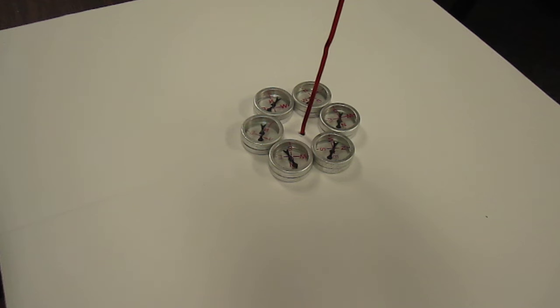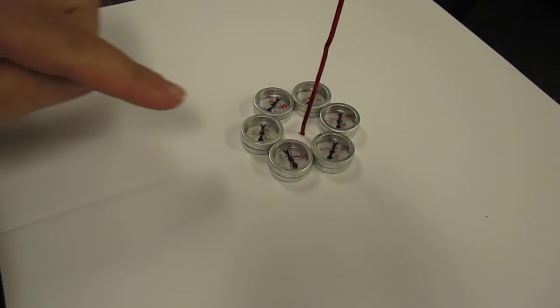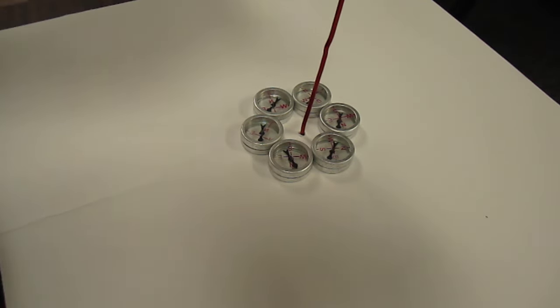I'm going to run current through the wire that will be coming up this way from underneath. So based on the right-hand rule, there should be a magnetic field around this wire. Let's find out which direction.